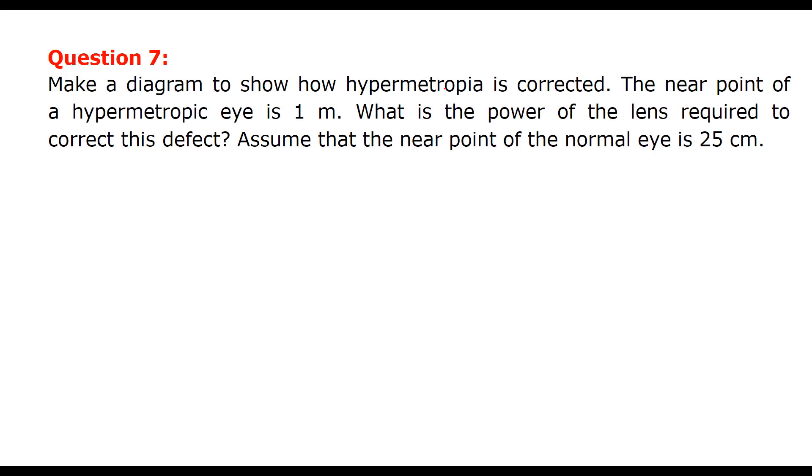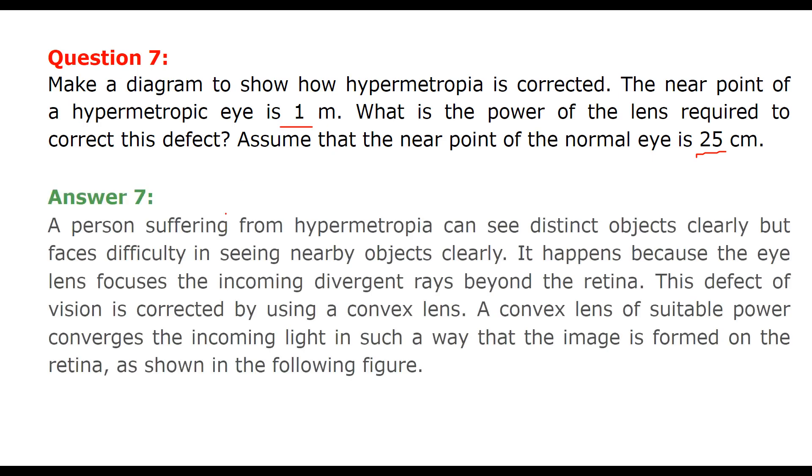Make a diagram to show how hypermetropia is corrected. The near point of hypermetropic eye is 1 meter. What is the power of the lens required to correct this defect? Assume that near point of normal eye is 25 centimeter. The person suffering from hypermetropia can see distant objects clearly, but faces difficulty in seeing nearby objects clearly.